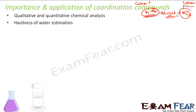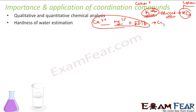Coordination compounds are also used to estimate water hardness. Water hardness is estimated by simple titration with EDTA. Water has calcium and magnesium ions — these are cations — and they form a stable complex with EDTA as the ligand. When EDTA reacts with these ions, it forms a complex, and this complex can easily be separated out, allowing you to detect the hardness of the water.